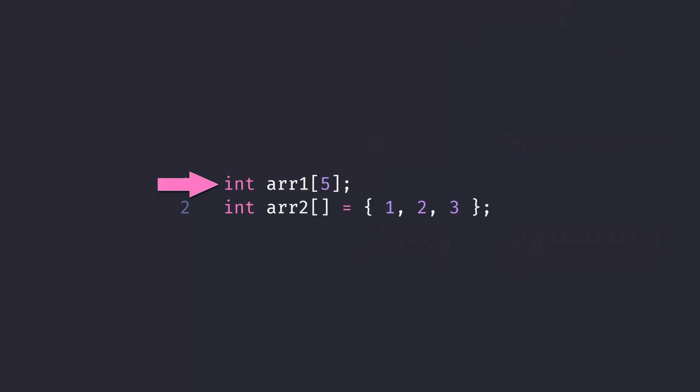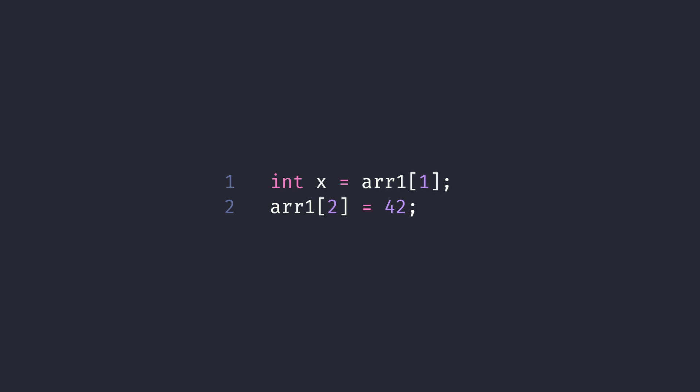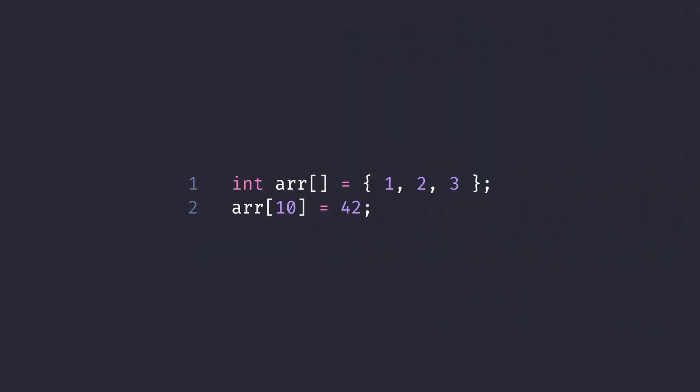Arrays. An array is a sequence of values of the same type. They are stored contiguously — one after the other in memory, with no gaps. The size of an array is fixed when you declare it and cannot be resized. We can either specify the size of the array up front, or we can let the compiler infer it from the number of arguments we give it. We can then use the square bracket operator to access these values. C++ provides no runtime bounds checking on an array, therefore it's possible to read and write past the end or before the beginning of an array. This is undefined behaviour and is a potential security risk.